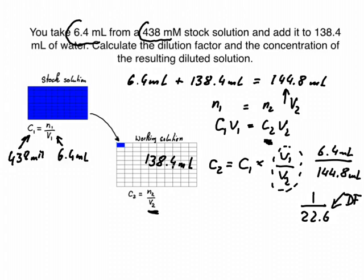And all we need to do is plug in the number for C1, that was 438 millimolar. And we get our concentration of the working solution C2 equals, if we put this into a calculator, we get 19.4 millimolar. So that would be our concentration of the working solution.